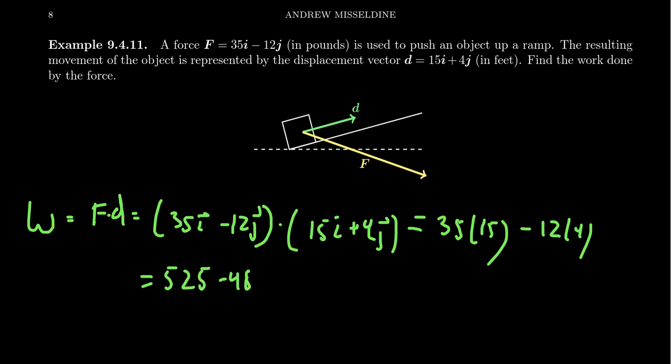Multiply these out: 35 and 15 gives 525, 4 and 12 gives 48. So we get 525 minus 48, which equals 477 foot-pounds of work. In terms of computing the dot product and the work, it's so much easier in algebraic form.